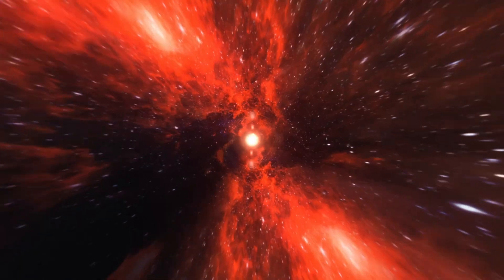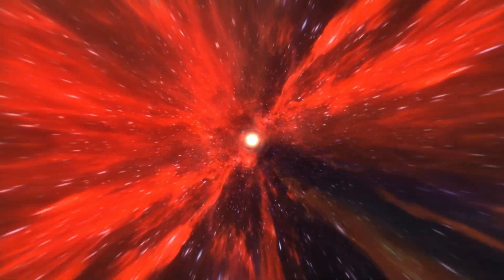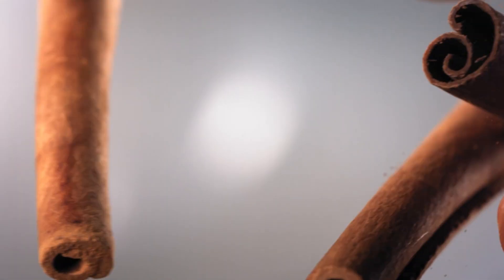Moreover, another potential factor contributing to the sudden increase in brightness could be a large-scale mass ejection from Betelgeuse's outer layers. Red supergiants are known to shed massive amounts of material as they age, and these ejections can form large clouds of dust and gas that surround the star. Such material can either obscure the star's light or, in some cases, reflect and amplify it, depending on the surrounding environment.